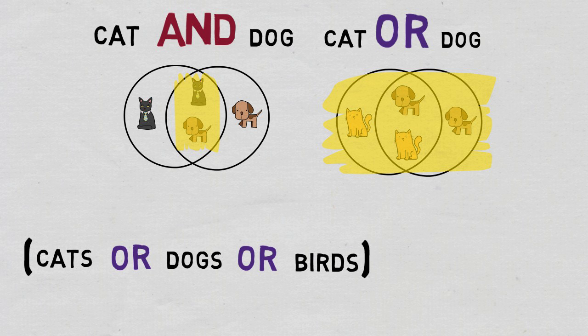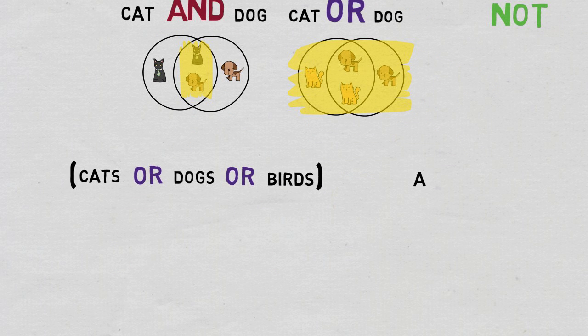First, we would place parentheses around cats OR dogs OR birds as if it were a mathematical equation. We would then add animal welfare using the Boolean operator AND.